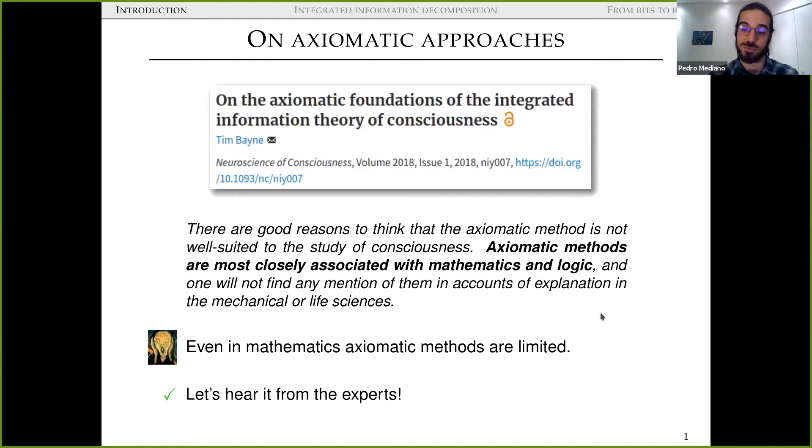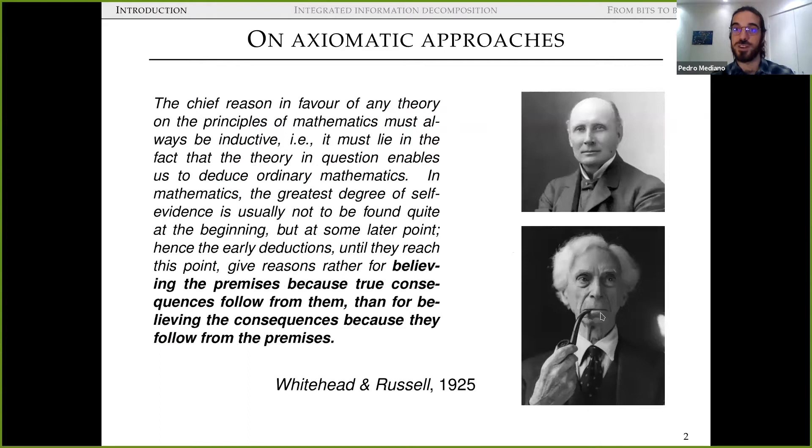I'm going to start by quoting these two gentlemen, Whitehead and Russell, who you may agree that they knew a thing or two about axioms. And they have this long quote from their Principia book in 1925. And I'm only going to tell you about the latter bit involved, which is that they really argue that one should believe the premises because the true consequences follow from them and not the other way around. You should not believe the consequences because they follow from some premises. So the axioms or the premises themselves are not enough to justify the truth value of anything that follows afterwards.